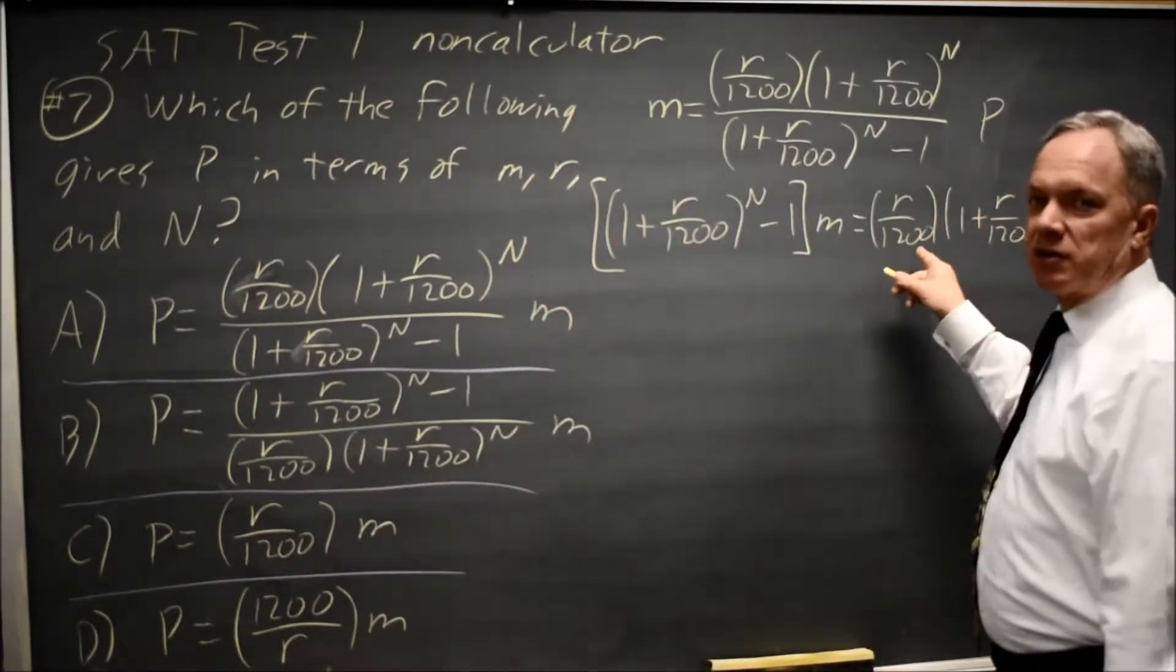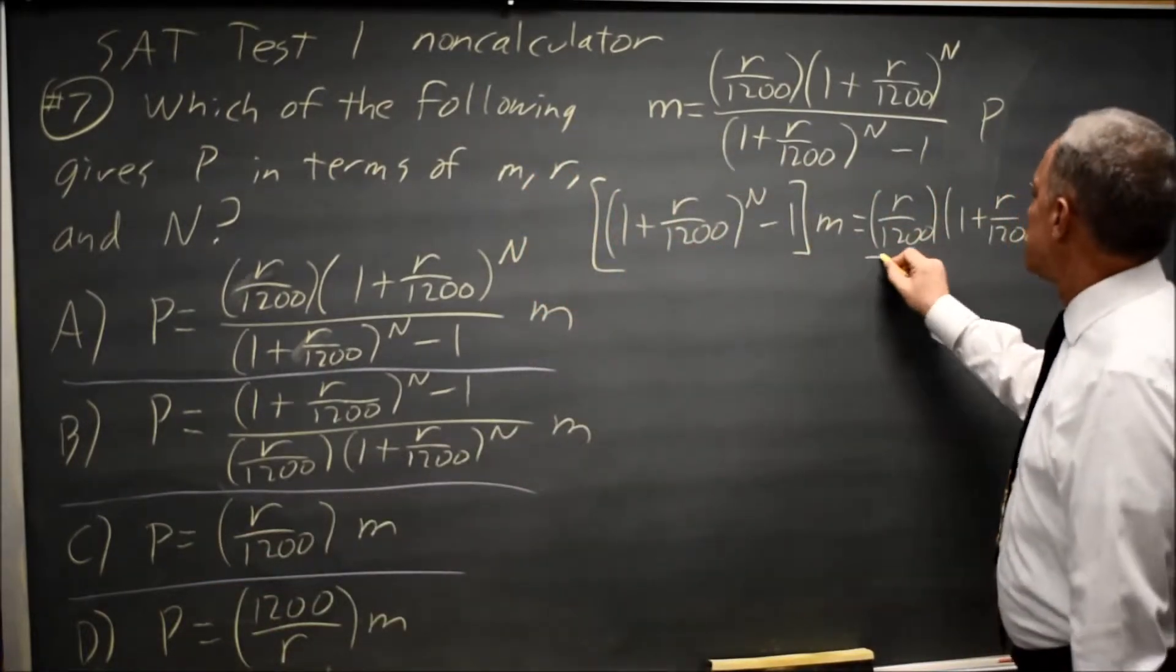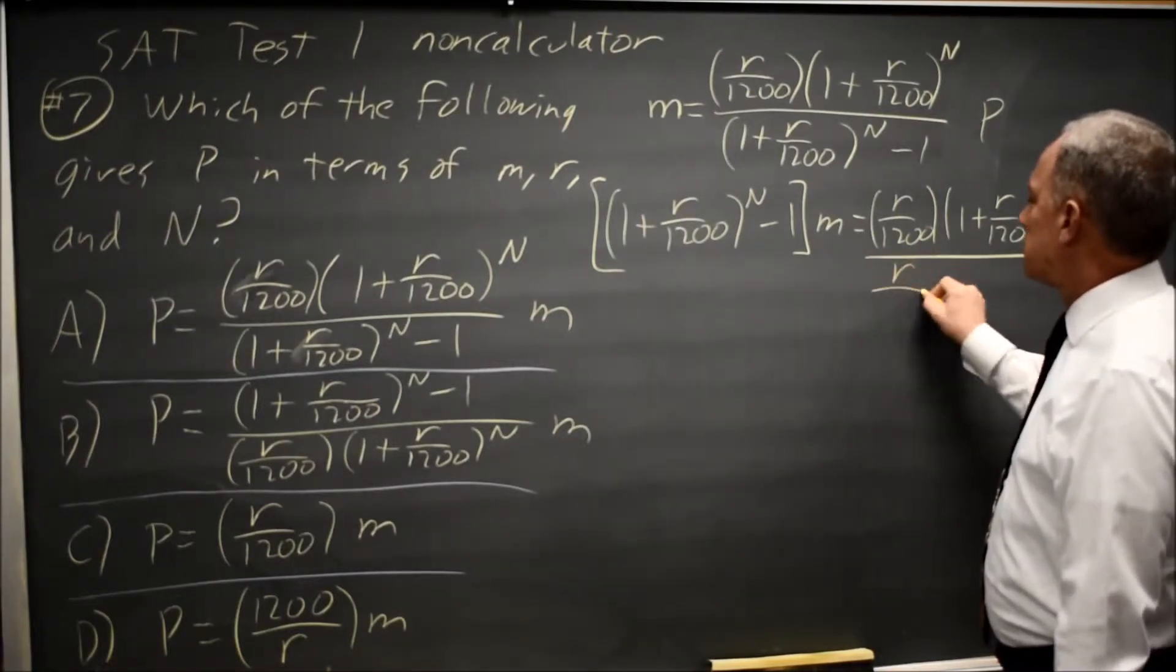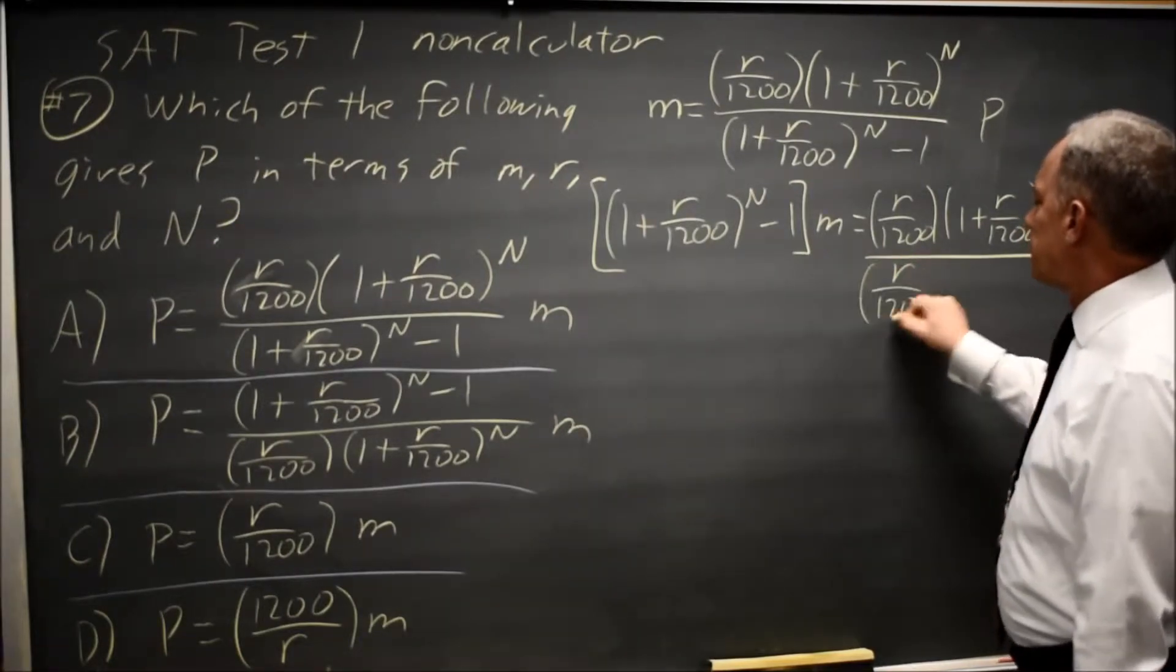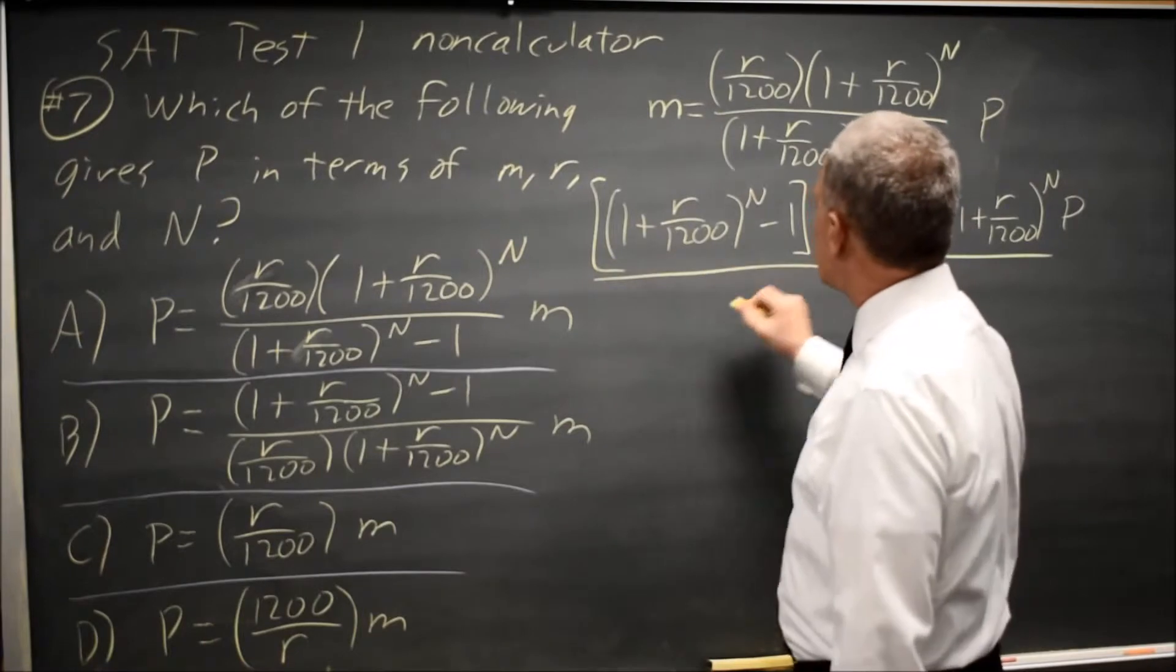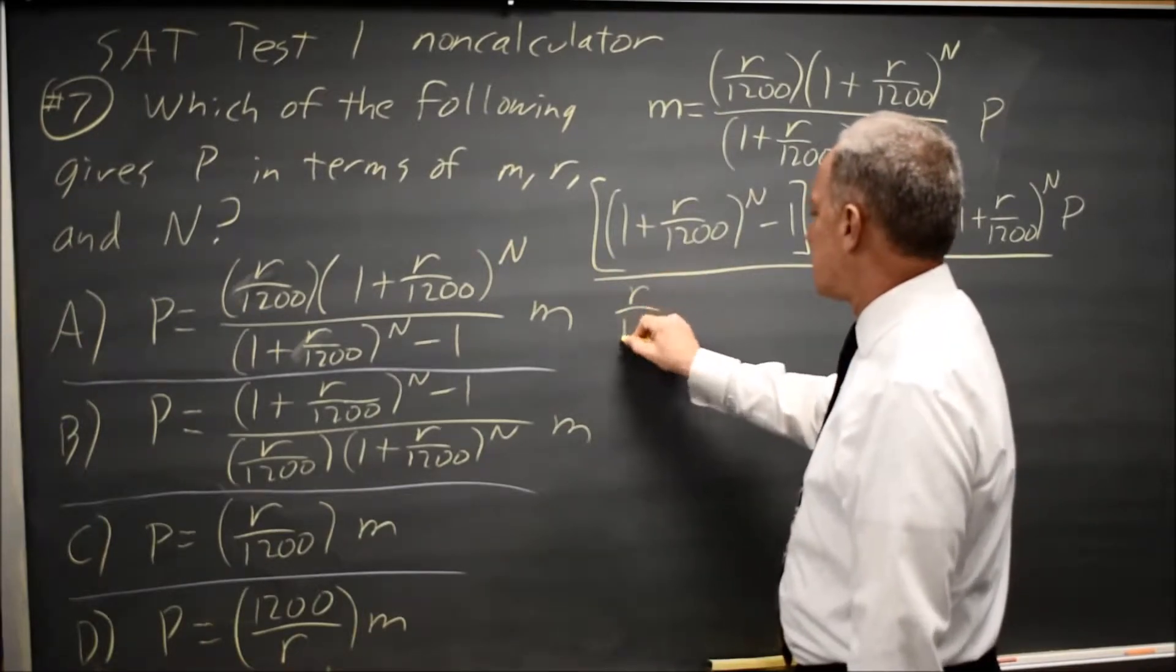P is multiplied by these two factors, so I'm going to divide both sides of the equation by the same factors, R over 1200. If I divide the right hand side by R over 1200, I divide the left hand side by the same thing, R over 1200.